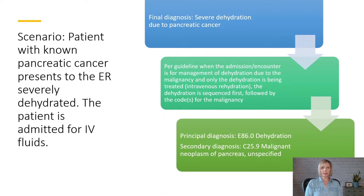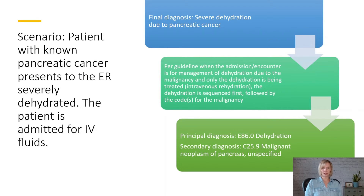For example, in this scenario, a patient with known pancreatic cancer presents to the ER severely dehydrated and is admitted for treatment with IV fluids. The final diagnosis is severe dehydration due to pancreatic cancer. In this case, the patient was admitted specifically to treat the dehydration and that was all that was done. So following the guideline, the dehydration will be sequenced as the principal diagnosis with the malignancy assigned as an additional diagnosis.